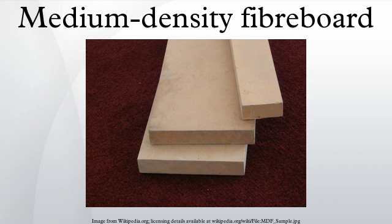The hot press activates the bonding resin and sets the strength and density profile. After pressing, MDF is cooled in a star dryer, trimmed, and sanded. In certain applications, boards are also laminated for extra strength. The environmental impact of MDF has greatly improved over the years.